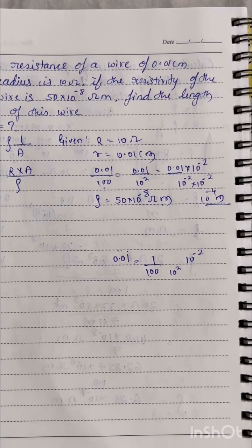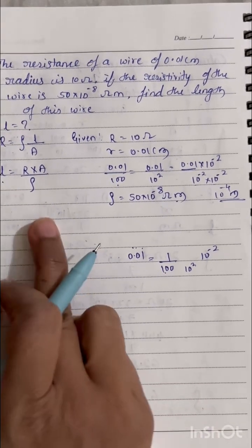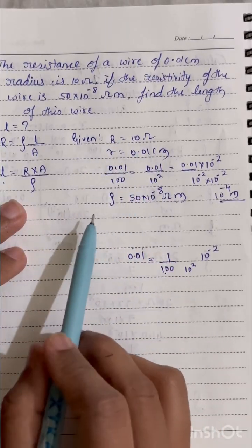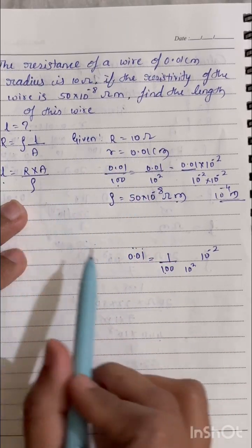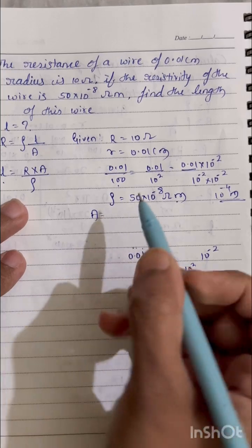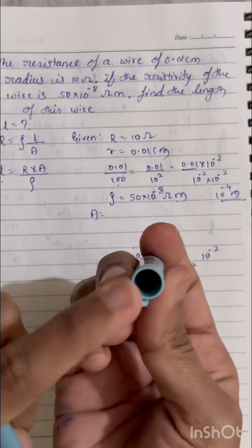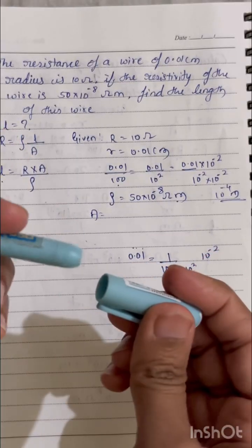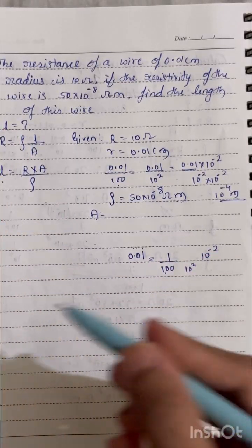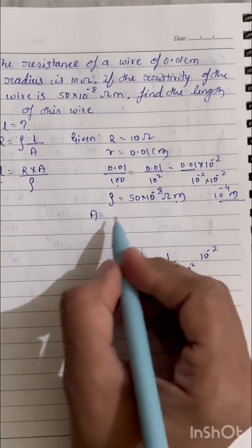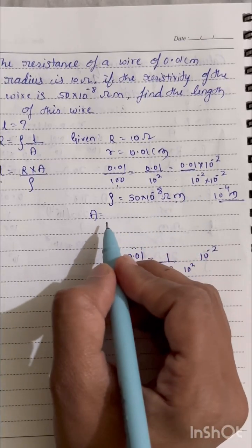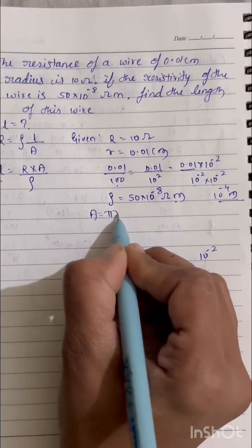Now we have R value and rho, yes. Now we have to find out the area. Area is nothing but when we will cut the wire, it looks like a circle, so we are finding the area of the circle, that means area of cross section. So that formula is pi r square.